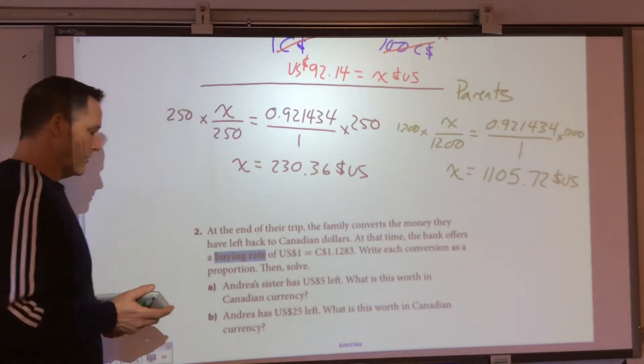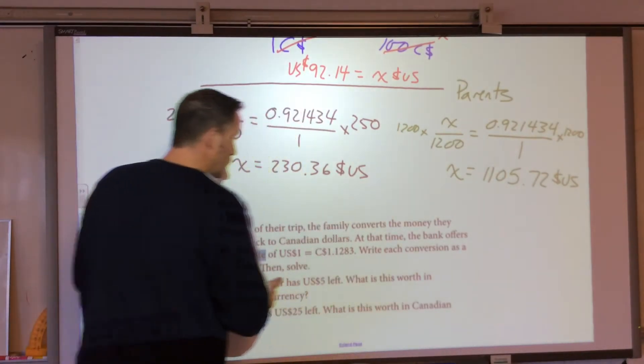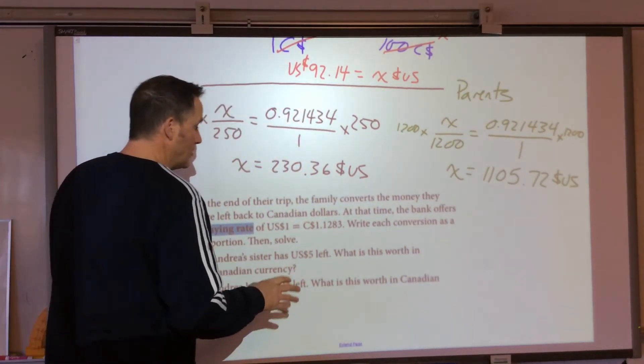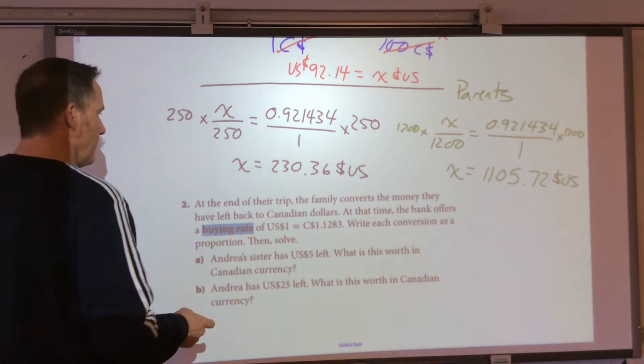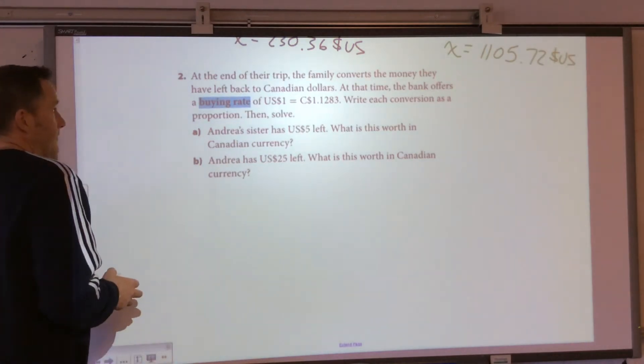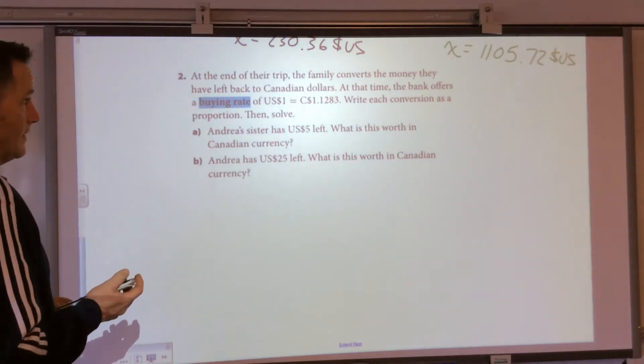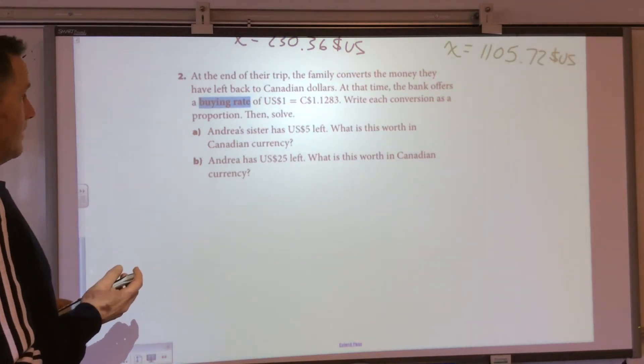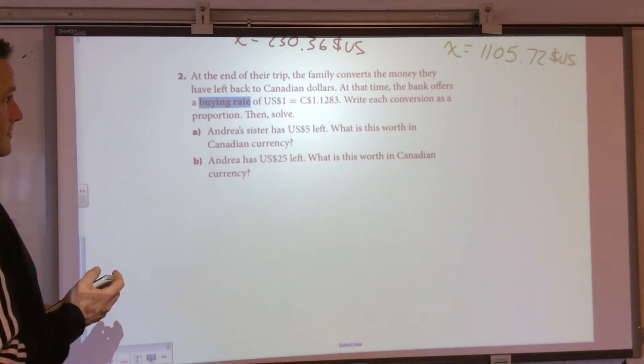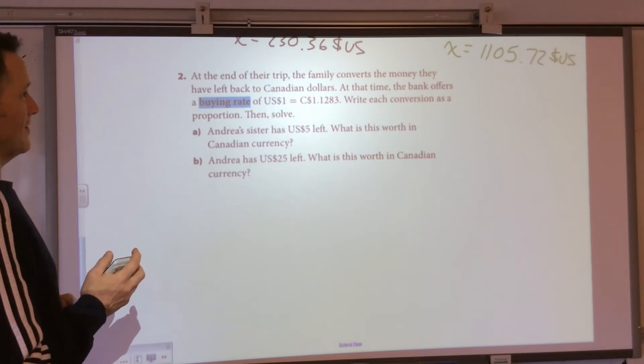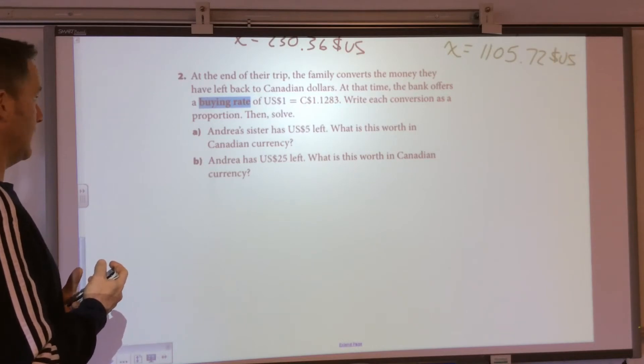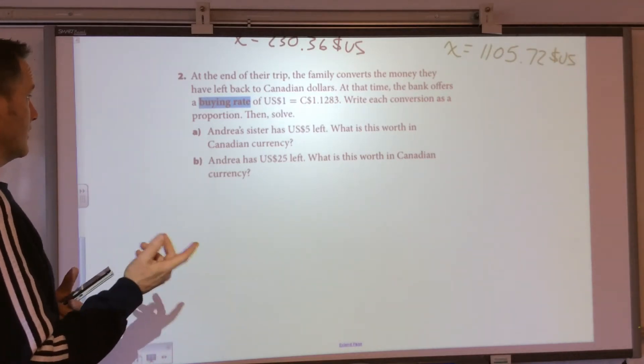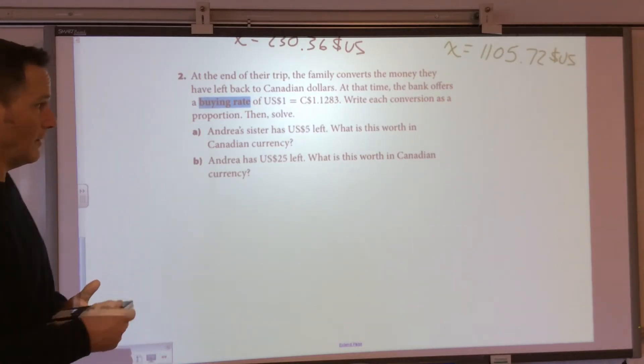In the end, after the trip, they're on their way home. What's the crazy part about the exchange rate? It changes constantly. It's never the same. At the end of their trip, the family converts the money they have left back to Canadian dollars at that time. The bank offers a buying rate. So, they're going to buy back the US dollars. And they're going to buy it back for $1.1283 Canadian dollars, for each conversion.